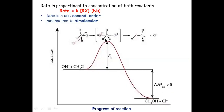Regarding kinetics, as stated, the rate is directly proportional to the concentration of both substrate and nucleophile, making it bimolecular. On an energy diagram, the reactants rise to a transition state at a higher energy level, then fall down to the product. The energy of the product is always less than the energy of the reactant. The energy barrier between the transition state and the reactants is called the activation energy.